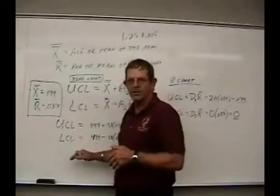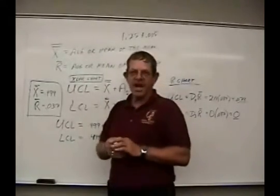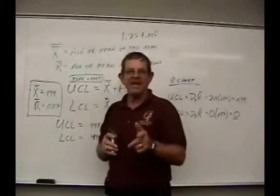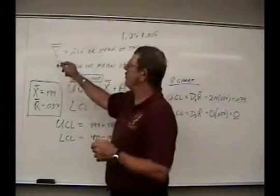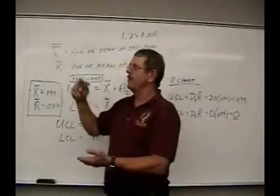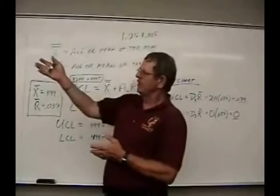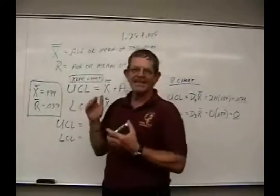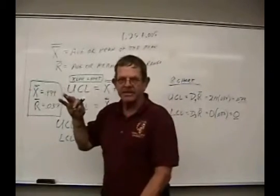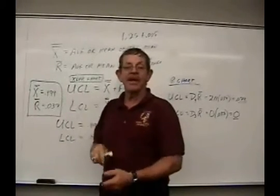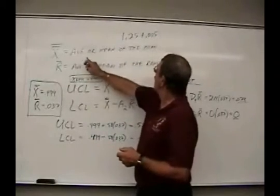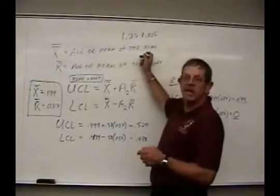So, each time we take five, we add the five up, divide by five, and we come up with a mean figure. Once you have that mean figure, you add up all the means and divide by the number of means that you have, which in this case, we have 20 sets. So that means we would take the numbers we added up on all the means and divide by 20 and we'd get a mean average figure. So x bar bar is the average or mean of the mean values.